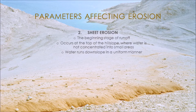On a larger scale, there is sheet, rill, and gully erosion. At the top of the slope, where runoff has just begun, water hasn't yet concentrated into smaller areas. The water is ponded on the surface and runs down in a uniform manner, like a sheet. Thus, erosion is uniform across the hill slope.